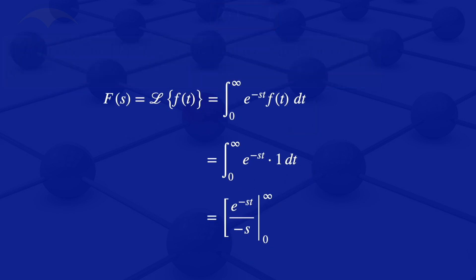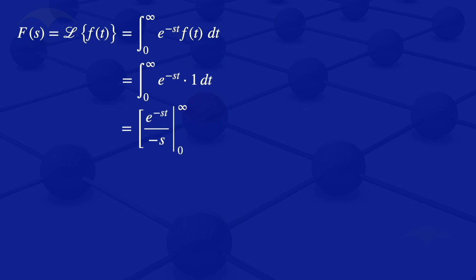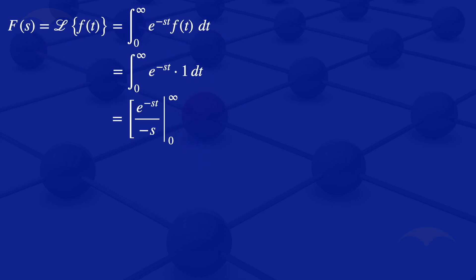So what is now left at this stage is to put in those limits. But the upper limit is infinity. So to put in that limit, we will write it as the limit as t approaches infinity of e^(-st) divided by -s, minus e^(-s×0) divided by -s.